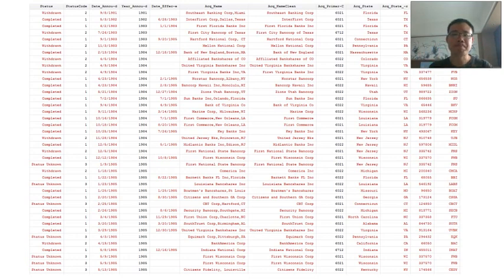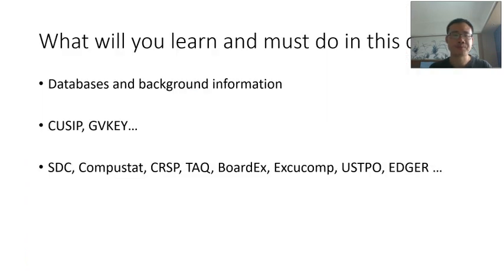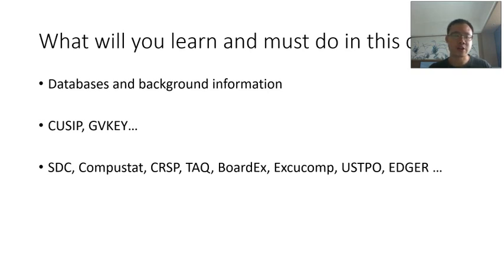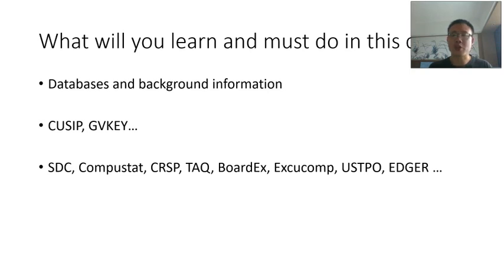This is how a typical dataset looks — data that you use to construct variables and analyze. In this course you will also learn detailed information about each database. For example, if you've never heard of CUSIP or GVKey, they are identifiers for firms. You will learn what they mean — for instance, CUSIP has six-digit, eight-digit, and nine-digit versions, how to convert one to another, and how to understand the meaning of GVKey.